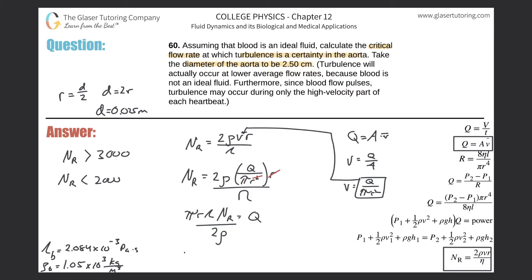Now plug everything in. It's going to be π multiplied by that radius, so d over 2, which is 0.025 over 2, multiplied by that viscosity. The viscosity was 2.084 times 10⁻³, which you might have to look up.